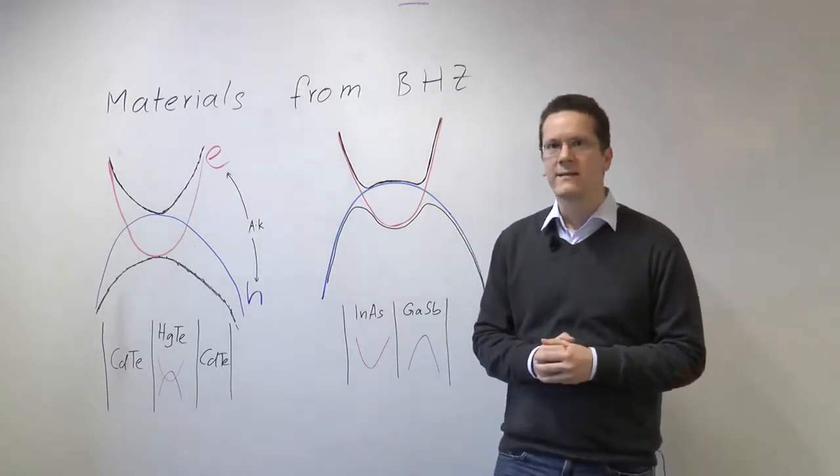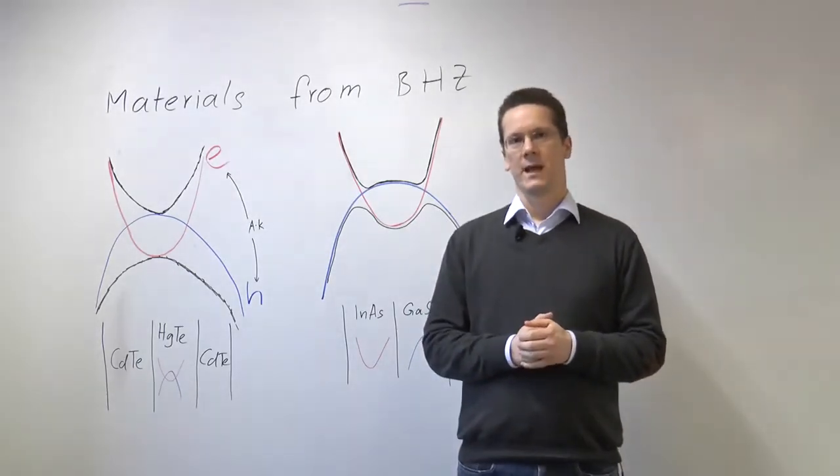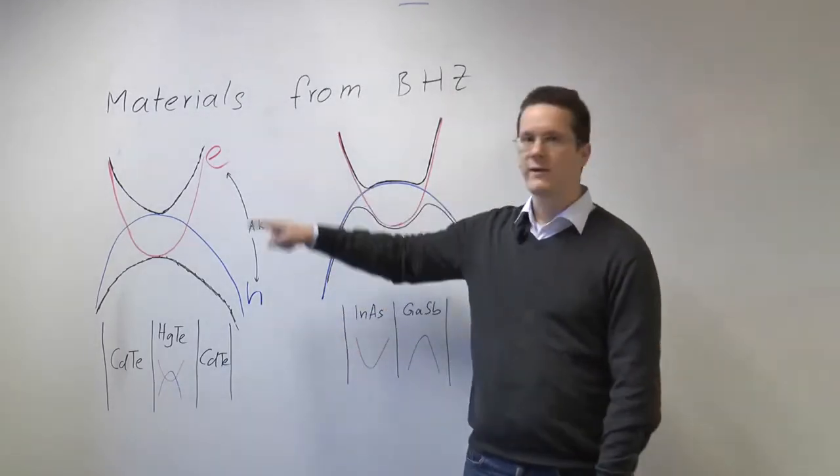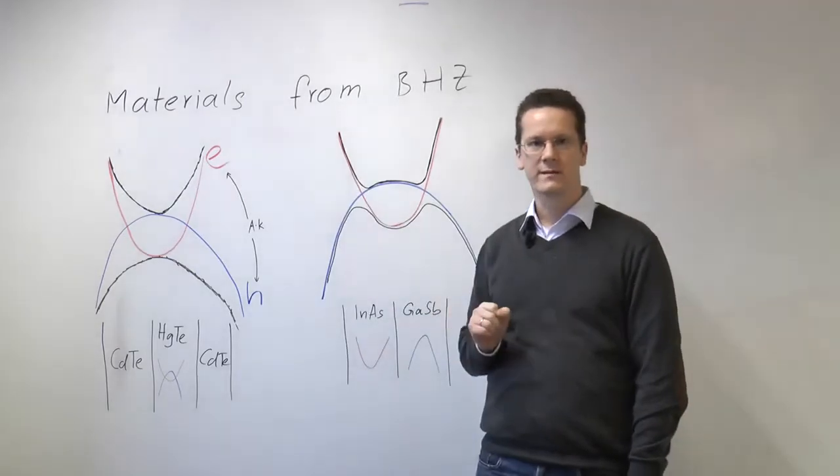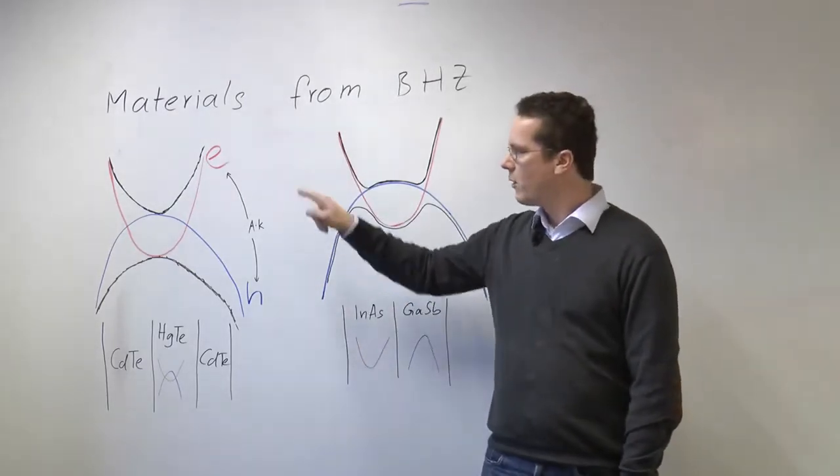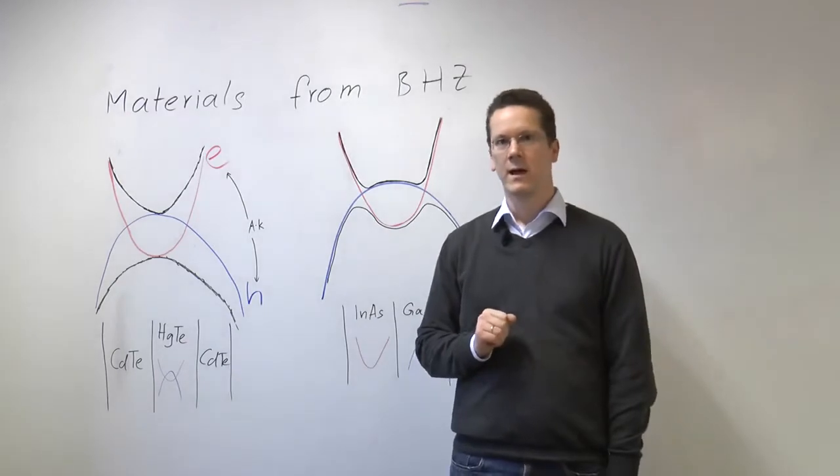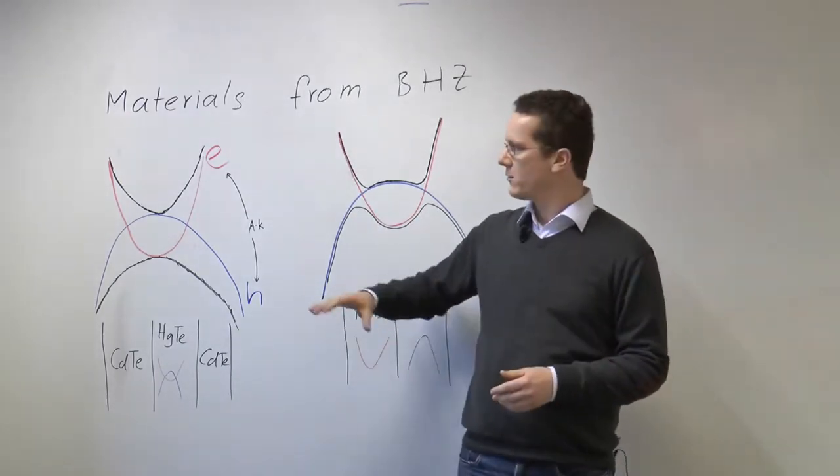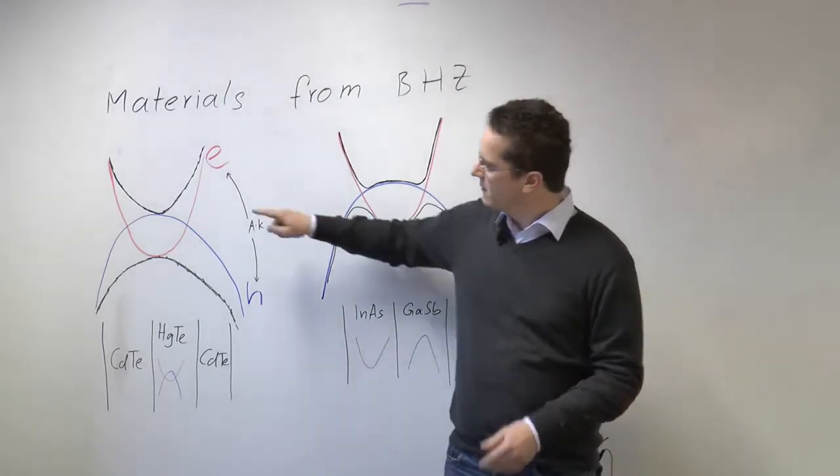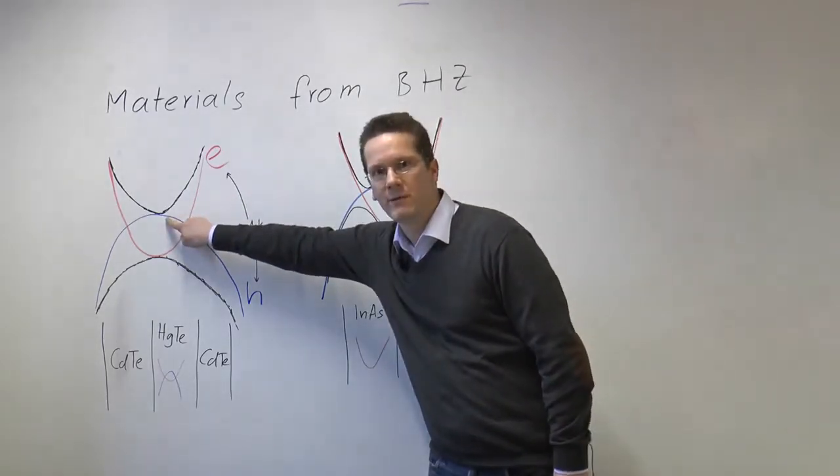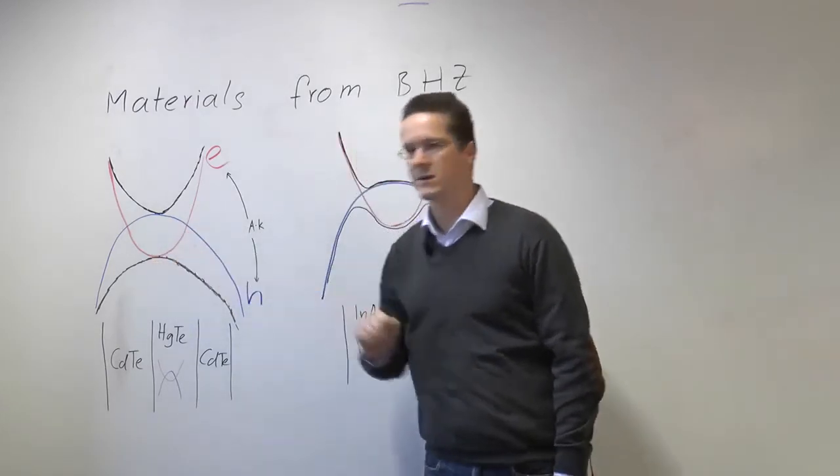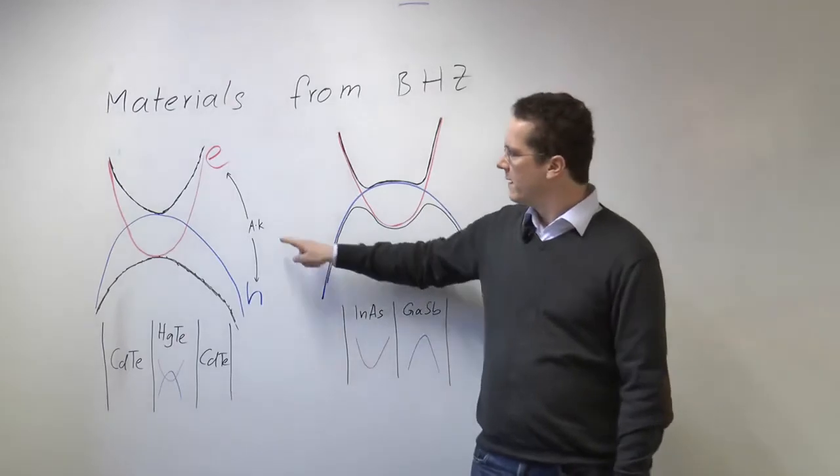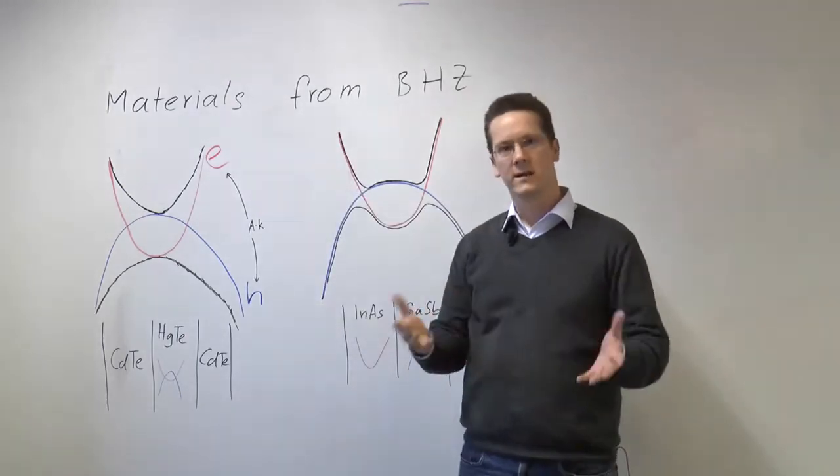So let's first recapitulate the BHZ model. In the BHZ model you have four ingredients: you have a band of electrons with a positive mass, you have a band of holes with a negative mass, in order to be in a topological regime you have to have the band already inverted, that is the band of the holes has to be above the band bottom of the electrons, and as a fourth ingredient you have to have a coupling between electrons and holes that is linear in the momentum.